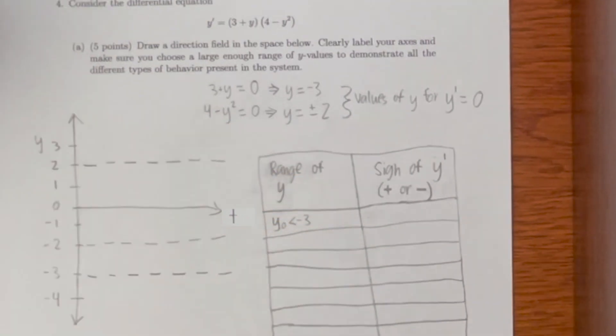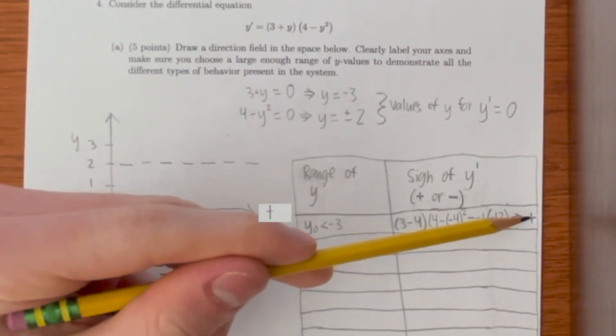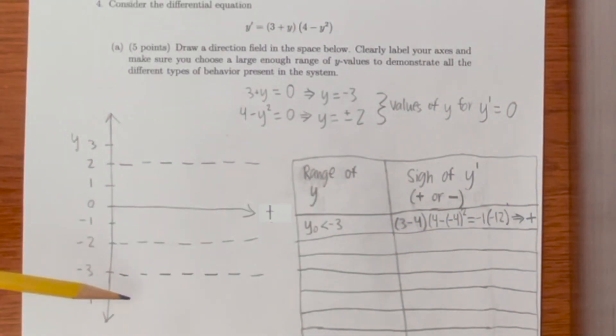We don't necessarily have to calculate the value. We can just determine whether the sign is going to be positive or negative. When we plug in negative 4, two negatives multiplied by each other is a positive number, so below here the slope is going to be positive.